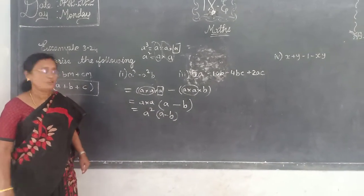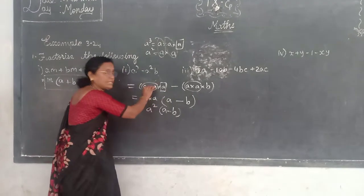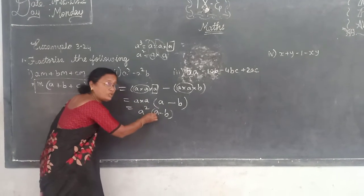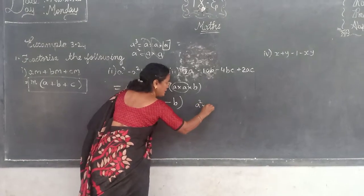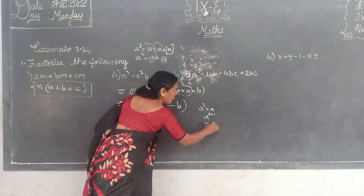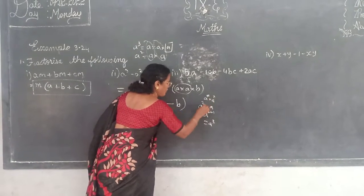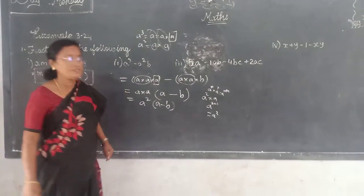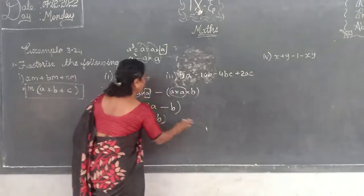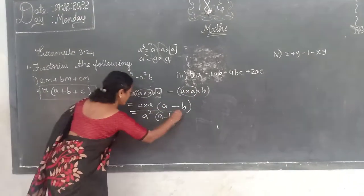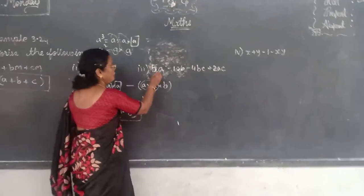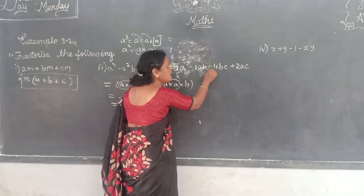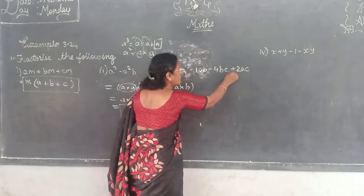Do you follow or not? Yes, every one of you. When you are multiplying you are getting the same term again — A to the power of N. Do you follow? Next. 5A minus 10B minus 4BC plus 2AC.